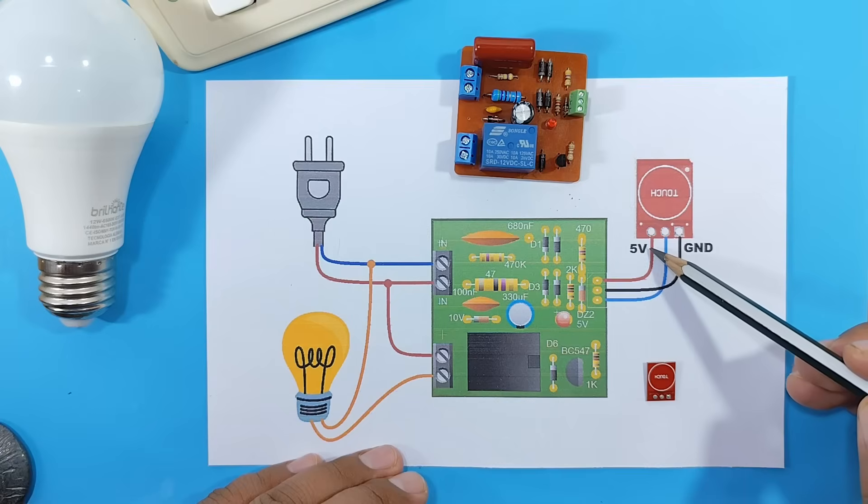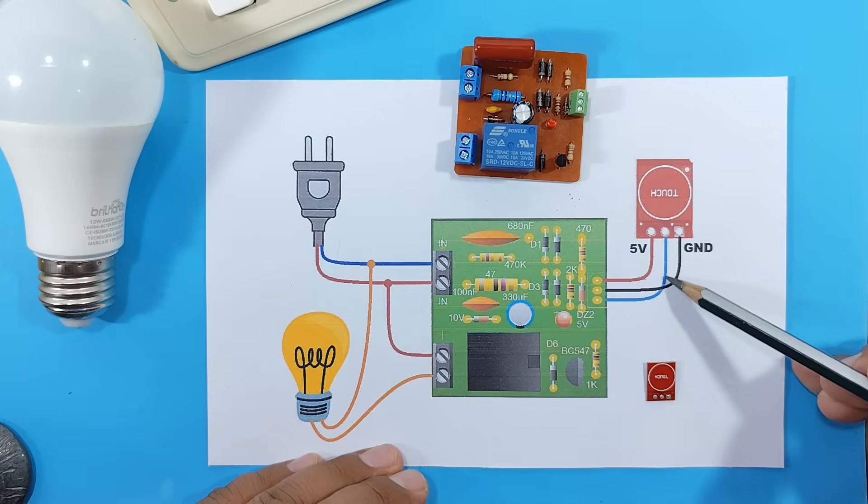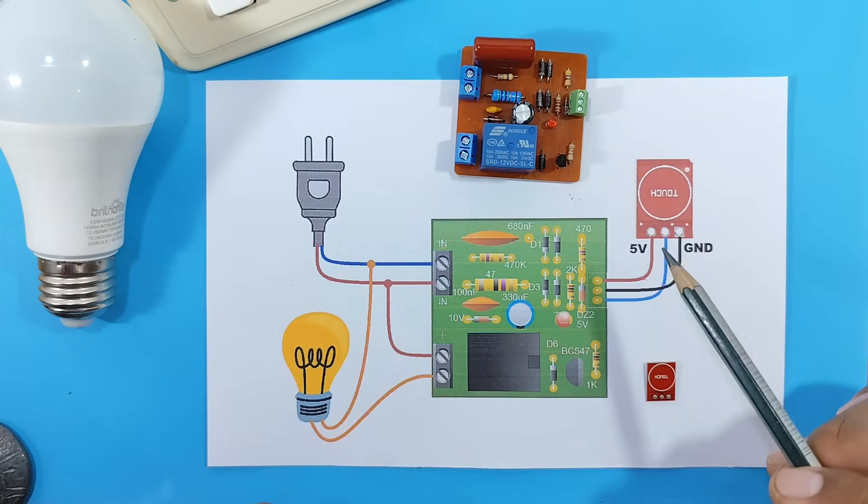On the sensor side, we have the 5-volt power supply, GND, and the signal wire. Those would be the connections.